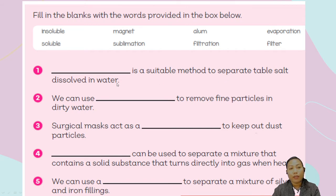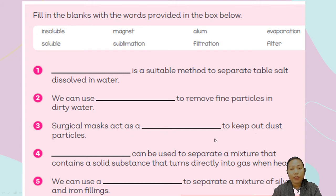Choose from the words listed. For number two: we can use blank to remove fine particles in dirty water. And number three: a surgical mask acts as a blank to keep out dust particles. Is it insoluble, soluble, magnet, sublimation, alum, filtration, evaporation, or filter?